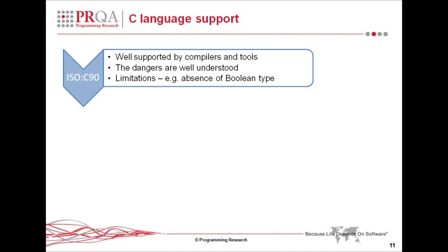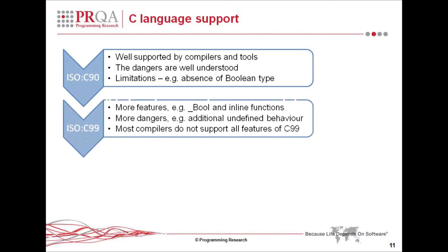The disadvantages of C90 are that there are some limitations — it doesn't, for instance, have a boolean type, which is a fairly fundamental defect of the language. In 1999, the C90 version was superseded by a new standardization of the language.